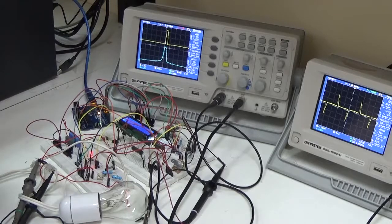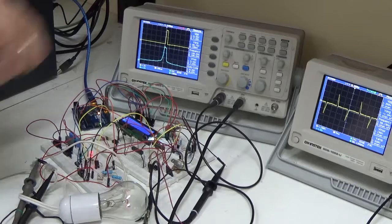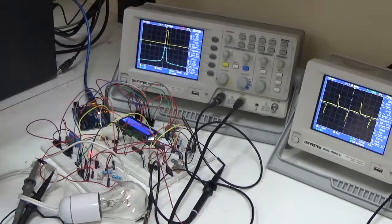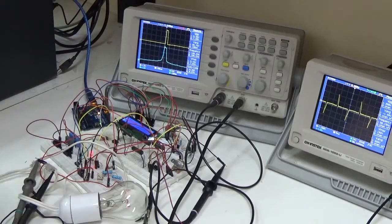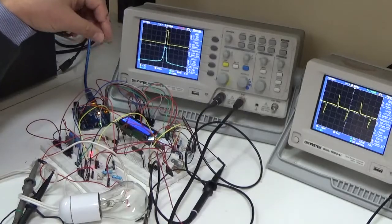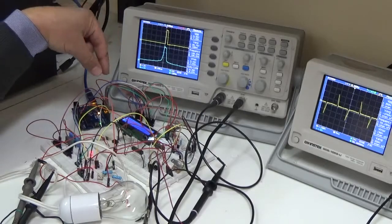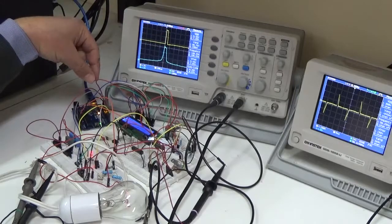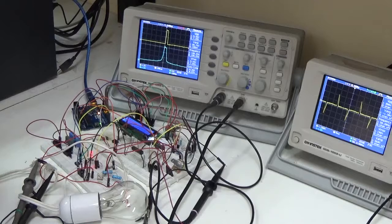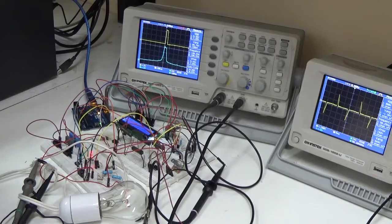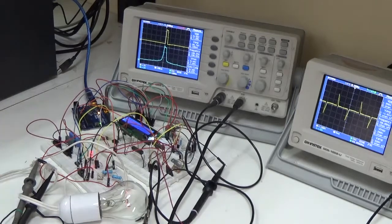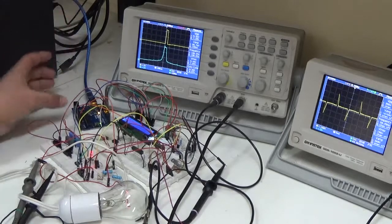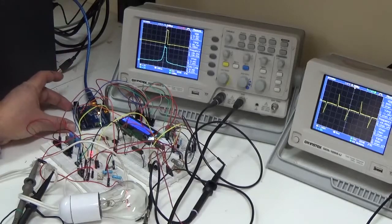After that, we will send the pulse that goes out from the Schmidt trigger to the Arduino, to pin number two, which is the external interrupt pin. The second part of the circuit consists of the digital control, which is the Arduino. The third part, which is the final part, is the power circuit.